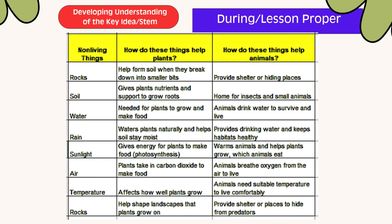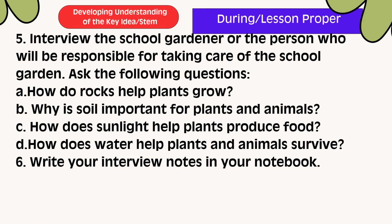Here are the possible answers. Interview the school gardener, or the person responsible for taking care of the school garden, and ask the following questions: How do rocks help plants grow? Why is soil important for plants and animals? How does sunlight help plants produce food? How does water help plants and animals survive? Write all your answers in your notebook.